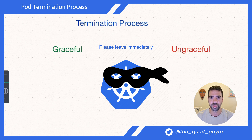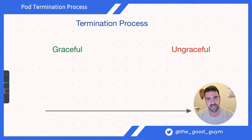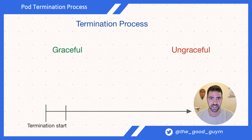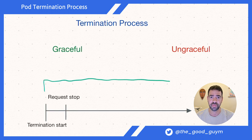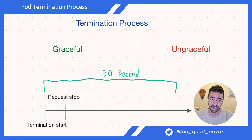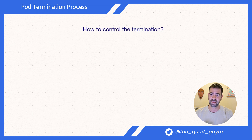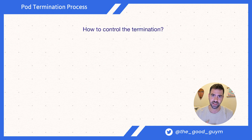What happens is Kubernetes triggers a graceful shutdown, stops requests from going through the service, and then waits for 30 seconds. Those 30 seconds are the time for the pod to shut down itself. If not, Kubernetes will execute the ungraceful shutdown. After understanding the process at a high level — the time from graceful shutdown to ungraceful shutdown — you may ask yourself how Kubernetes interacts with your application and pod in order to signal the graceful shutdown.